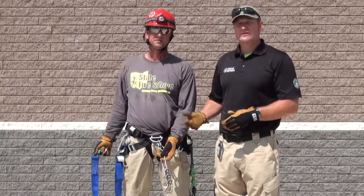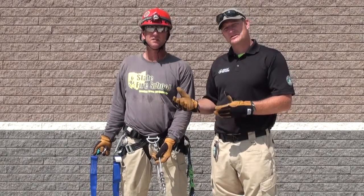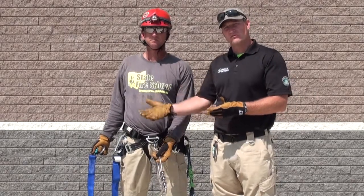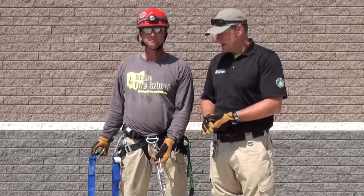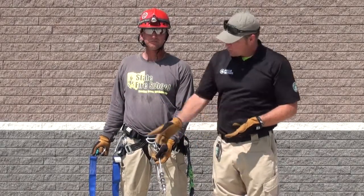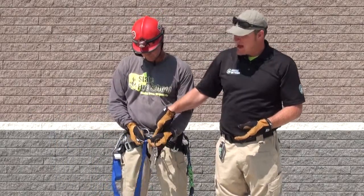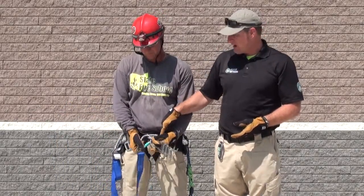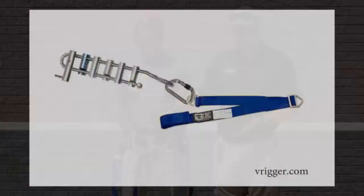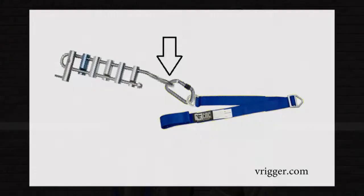In this configuration, to ensure that we extend the load of the victim to the main line, we're going to clip the U of our pick-off strap into the eye of the rack — ensuring again that the load of the victim never falls on the harness itself, always ensuring the load is transferred to the main line.